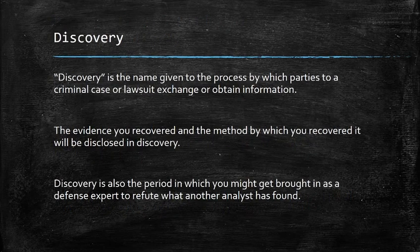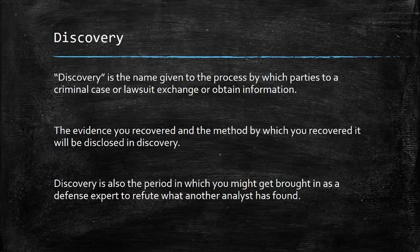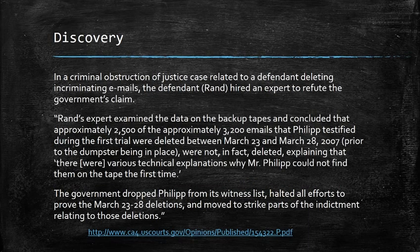The next issue is discovery. Discovery is the name given to the process by which parties to a criminal case or a lawsuit exchange or obtain information. The evidence you recovered and the method by which you recovered it will be disclosed in discovery. That's also the period when someone else recovers evidence where you might get brought in as a defense expert to refute what they found. This came to light with a Fourth Circuit opinion — in a criminal obstruction of justice case related to a defendant deleting incriminating emails, the defendant Rand hired an expert to refute the government's claim.